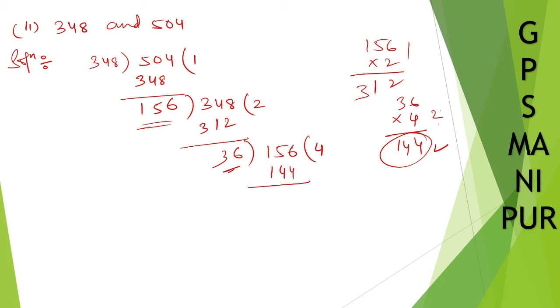Subtract this number. 1 goes here, 16. 16 minus 4. Oh no, no, I'm sorry. 6 minus 4, it is 2. 5 minus 4, it is 1. 12 is the answer.